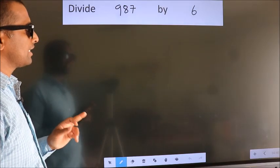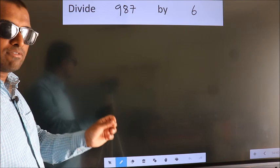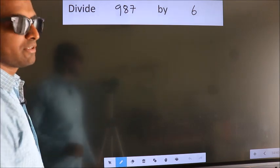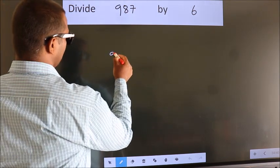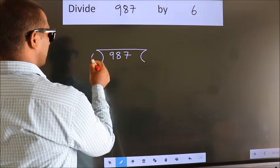Divide 987 by 6. To do this division, we should frame it in this way: 987 here, 6 here.